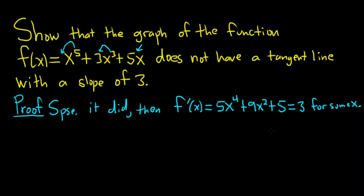So now we just have to reach a contradiction. So how do we do that? The natural thing maybe is to subtract 3 from both sides. So minus 3, minus 3. That leaves us with 5x to the 4th plus 9x squared plus 2 equals 0.